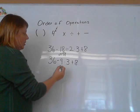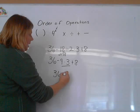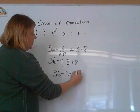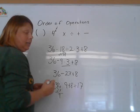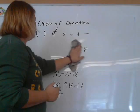Now the next thing we do is the multiplication. 36 minus, 9 times 3 is 27, plus 8. And then we just work it across. 36 minus 27. 9 plus 8, which equals 17. That one's pretty easy too.